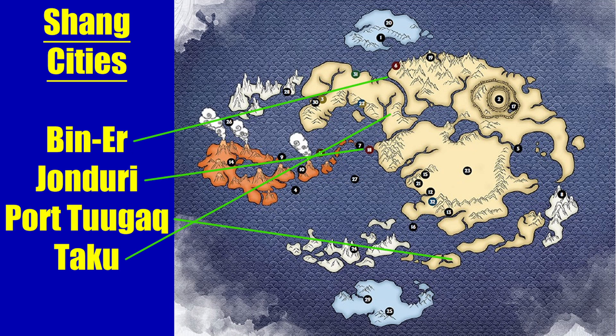Jonduri, the other Shang city visited heavily in this book, is noted as being one of the more tail-end fire islands — at the tail of the Fire Nation as it approaches the Earth Kingdom. We don't know which specific fire island it is, but it seems to be somewhere around numbers seven and eighteen on the map, noted as not super close to the actual mainland of the Fire Nation and with a bit more cultural influence from other nations.